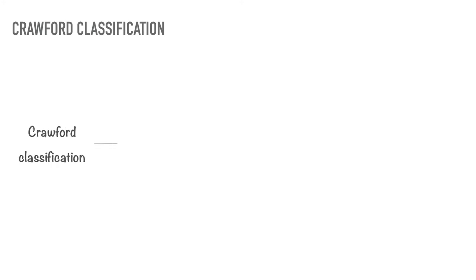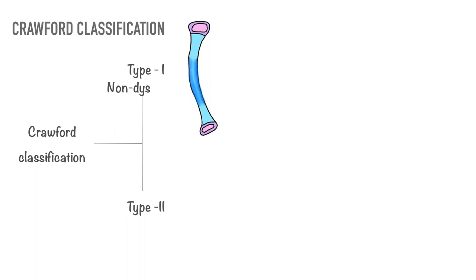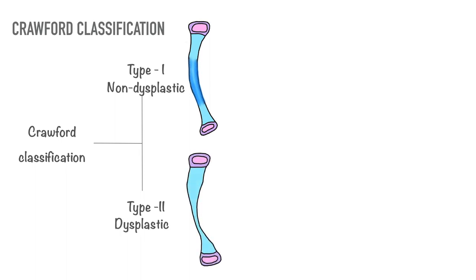The Crawford classification divides congenital pseudoarthrosis of tibia into two main types. Type 1 is non-dysplastic with anterior bowing and increased cortical density. Type 2 is dysplastic and shows failure of tubulation and a narrowed sclerotic medullary canal. It has two subtypes: type 2a and type 2b.